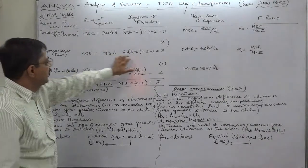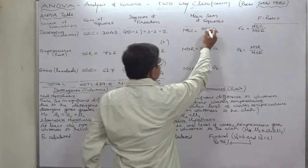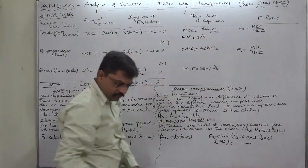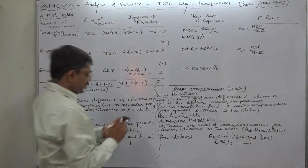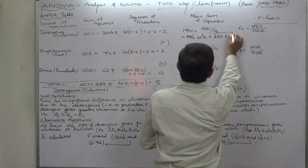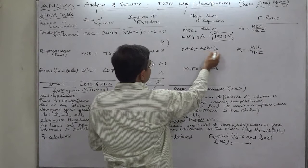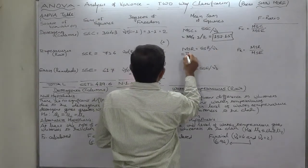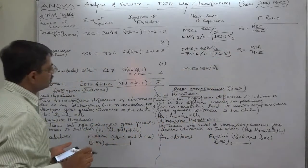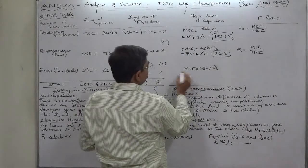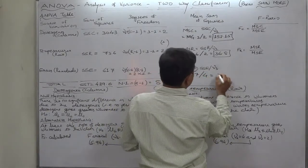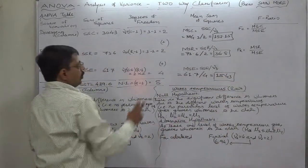Let's calculate MSC, which is SSC divided by its degrees of freedom: 304.3 divided by 2 equals 152.15. MSR will be SSR divided by degrees of freedom 2: 73.6 divided by 2 equals 36.8. MSE will be SSE divided by degrees of freedom 4: 61.7 divided by 4 equals 15.43.